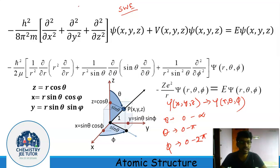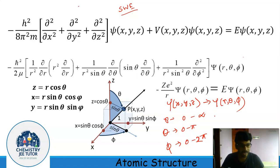I won't go into the details of the mathematical steps required to solve the Schrödinger wave equation, as that is not important at this stage. Rather, I will try to emphasize the outcome of the Schrödinger wave equation solution. In spherical polar coordinates, we can separate ψ(r, θ, φ) into two parts: a radial part R(r), multiplied by an angular part Y(θ, φ).